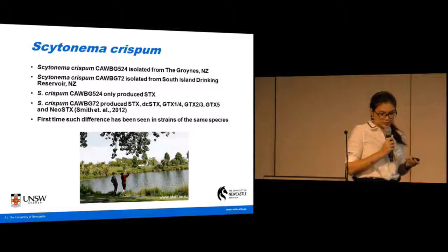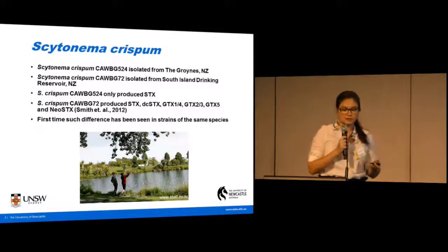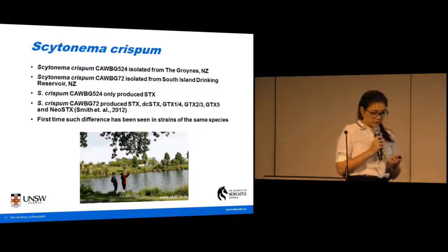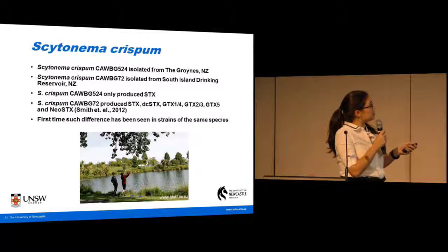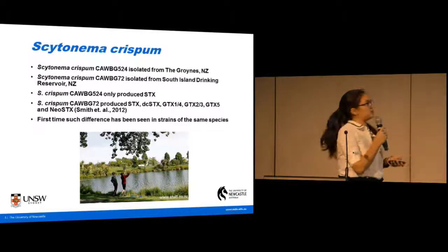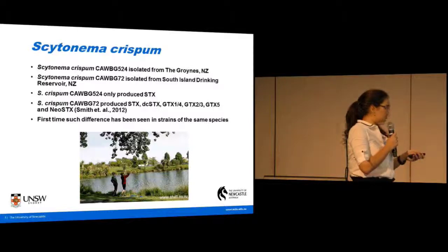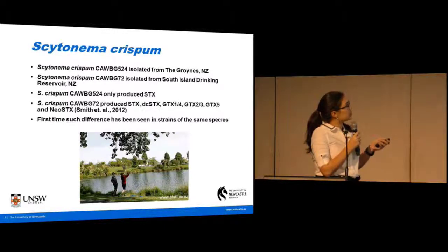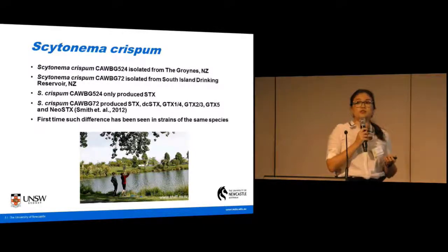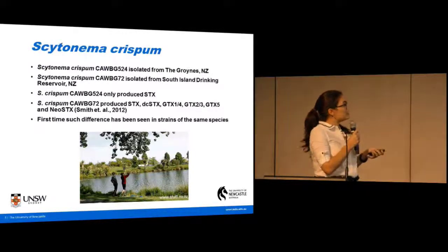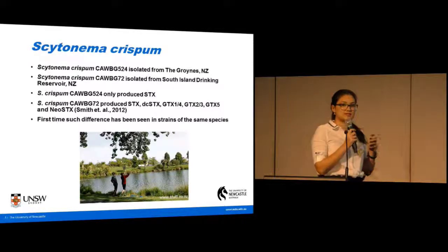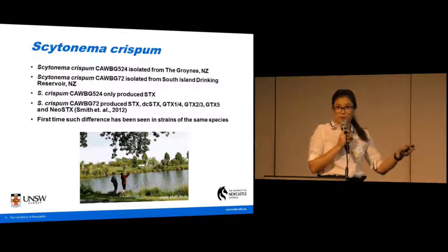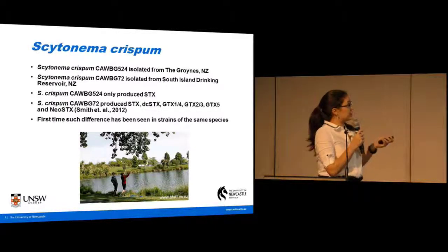We chose to do so in two strains of Cytonema crispum, both isolated from the South Island of New Zealand, from regions where they could have easily come into contact with humans. The first strain, Cytonema crispum core BG-524 — which I'll refer to as 524 — was isolated from the Groynes, a recreational lake system. The other strain, Cytonema crispum core BG-72, was isolated from a South Island drinking water reservoir. Interestingly, strain 524 only produces saxitoxin, whereas strain 72 produces saxitoxin as well as a whole array of other paralytic shellfish toxins.